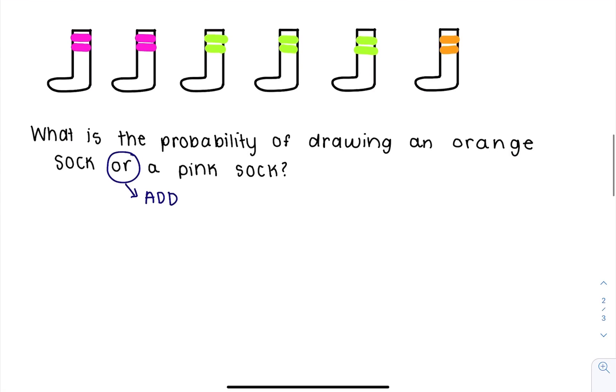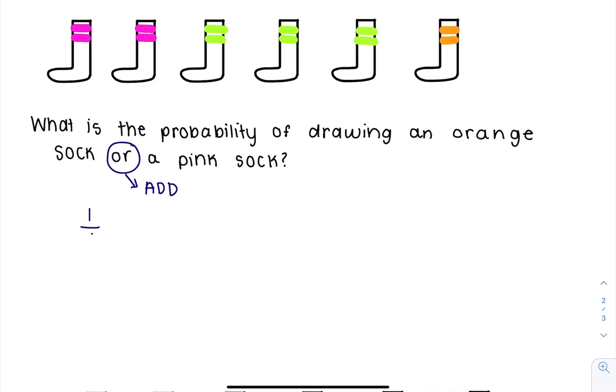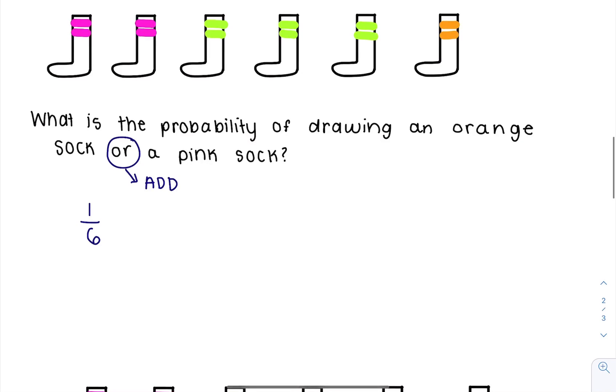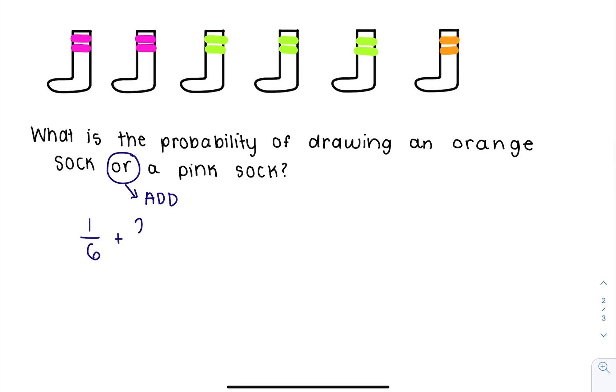And now we're going to add it to the probability that we could draw a pink sock, which is 2 out of 6. So we end up with the probability of 3 out of 6 or 0.5. And you can also see that just by thinking, well these would work or these would work, which is 3 out of 6.